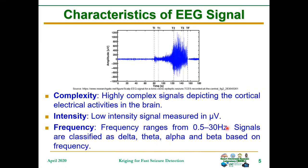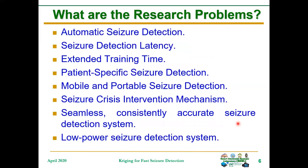These are the characteristics of EEG signals. Complexity is high, intensity is low — in the microvolt region — and frequency is between the range of 0.5 and 30 Hz. These are the research problems in the seizure detection research community: automatic seizure detection, seizure detection latency, and the rest of them on the slide.